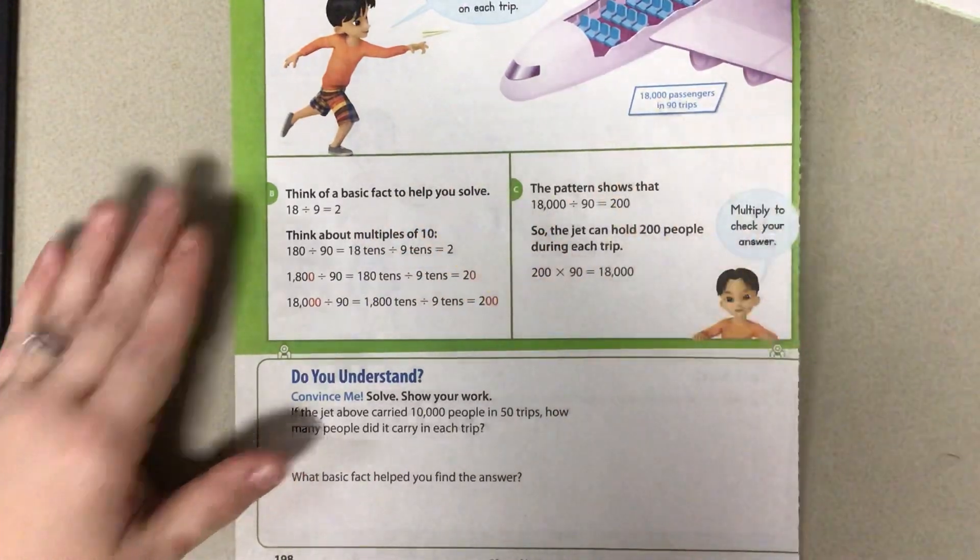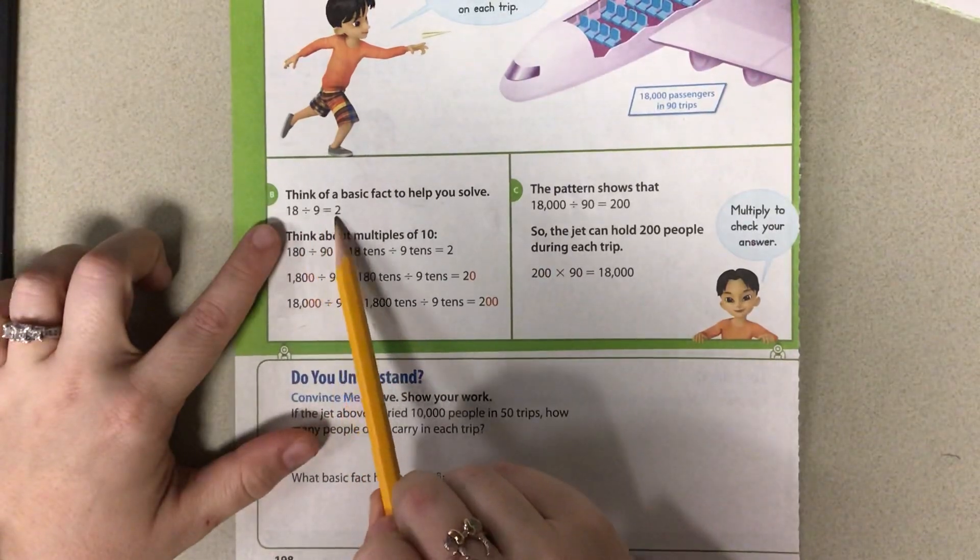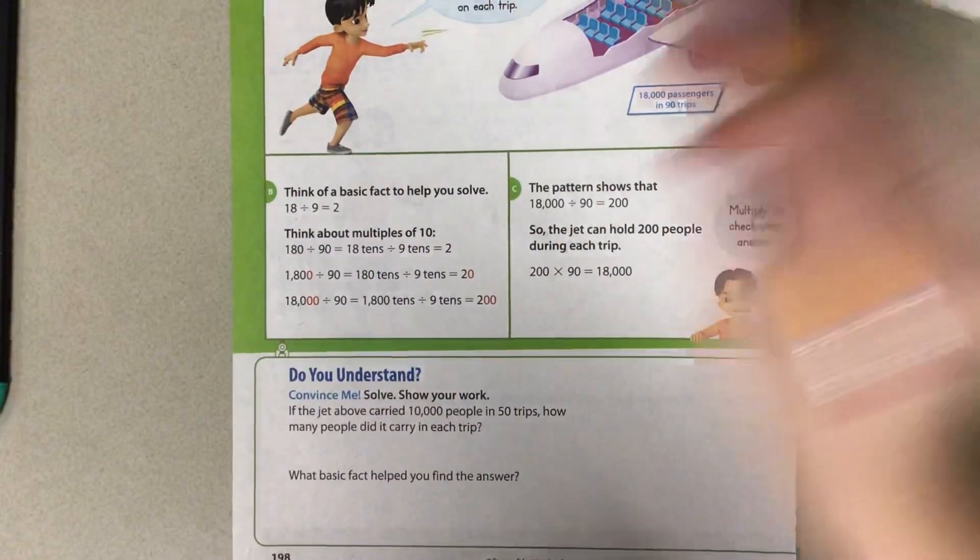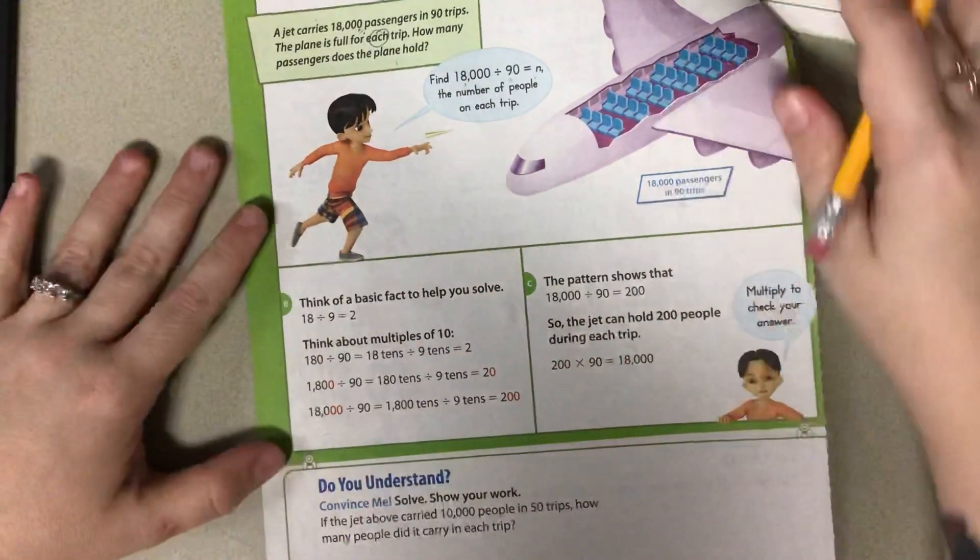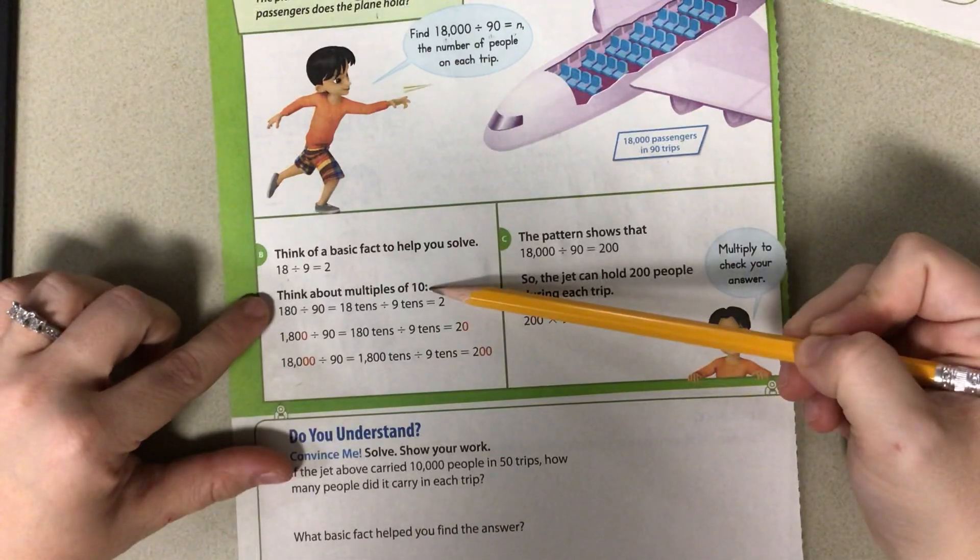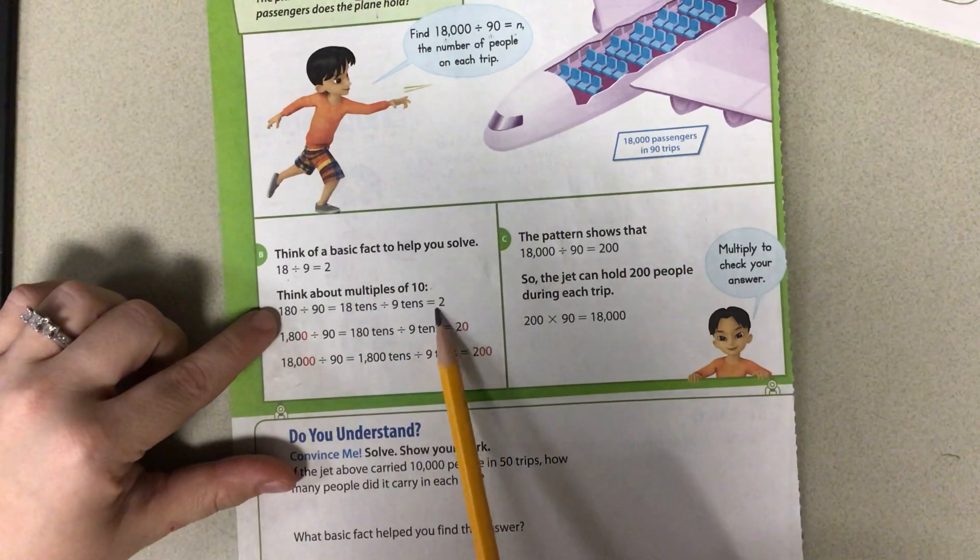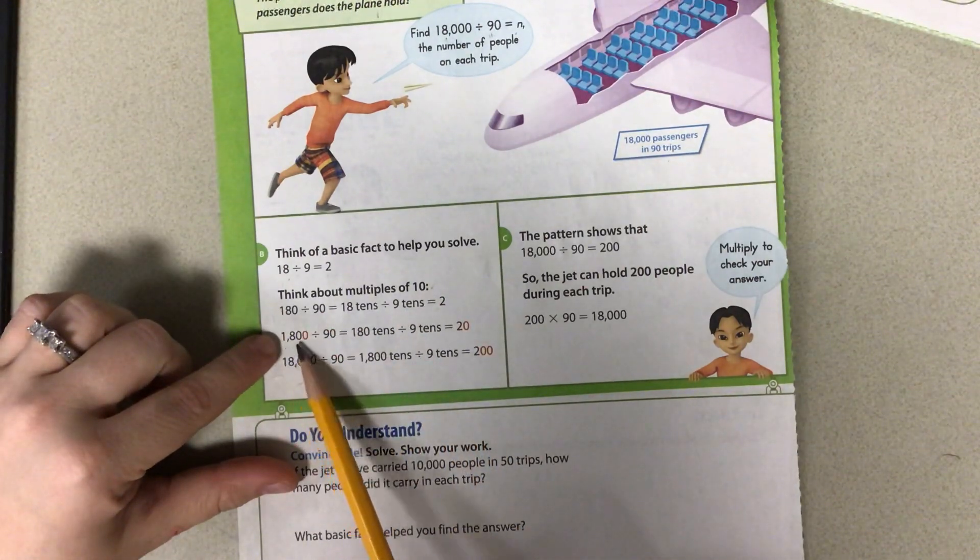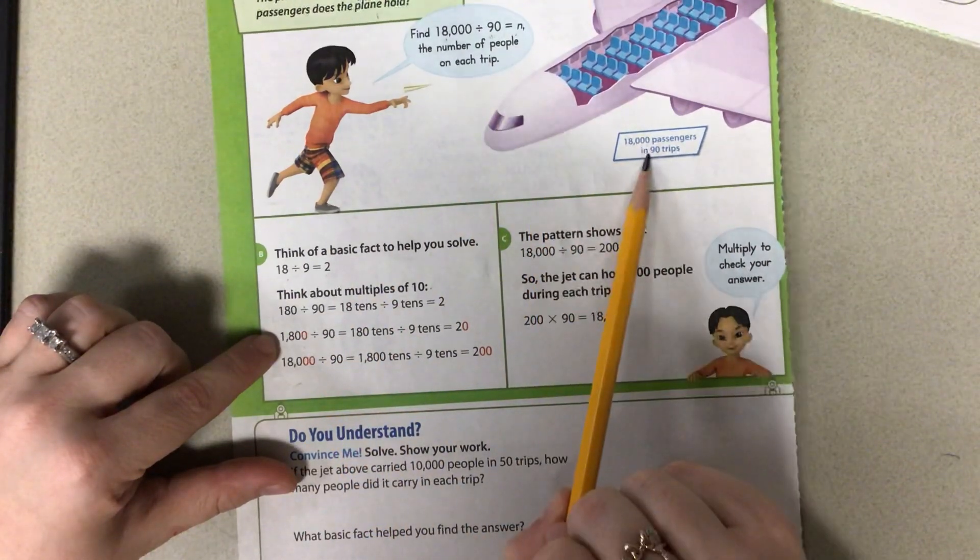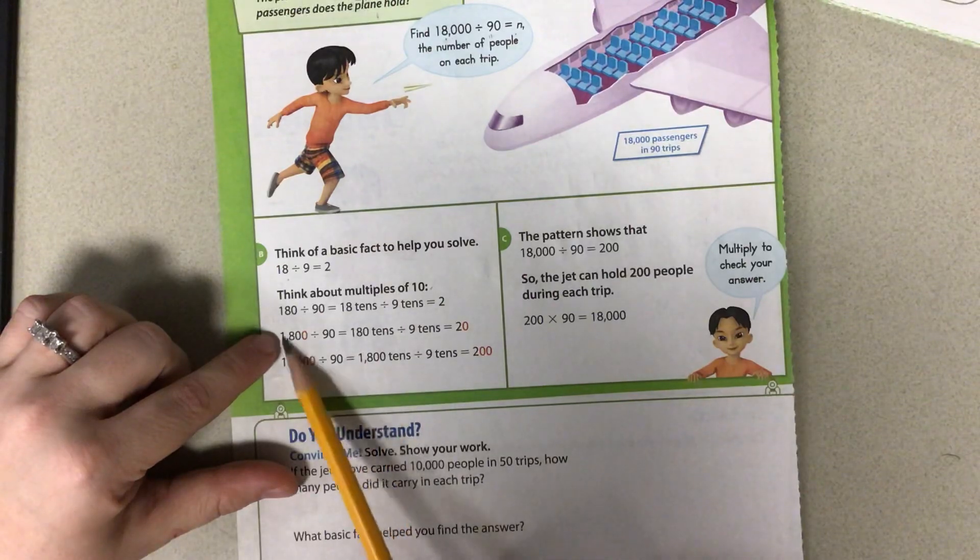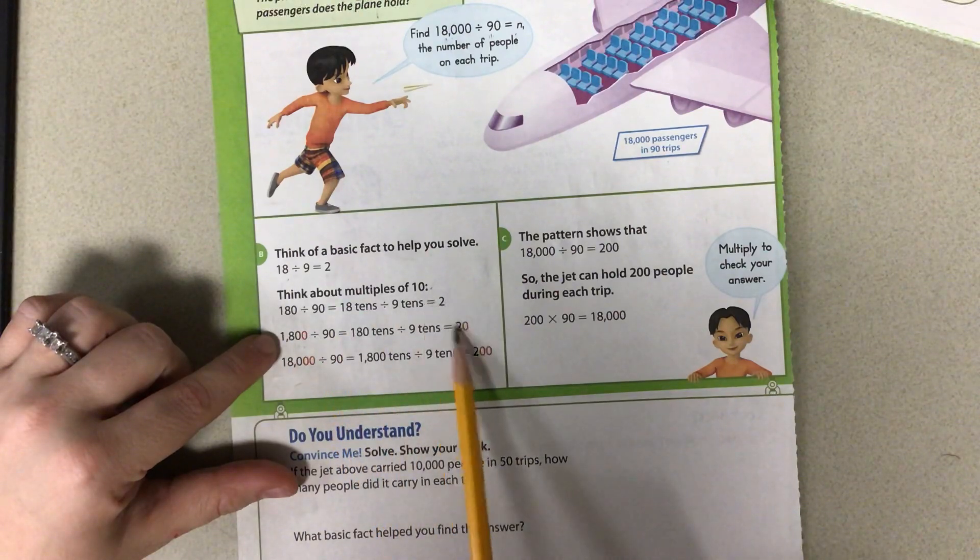They said think of your basic math facts to help you. So here we have 18 divided by 9 is 2 because 2 times 9 is 18. So they took this 18 and they took this 9. They took away all the 0s and they started super basic. Then they thought about it in multiples of 10. So they said 180 divided by 90 is 2. 1,800, so they added that extra 0, divided by 90. They left the 90 the same because the 90 is in your problem. So they're just upping this part each time.